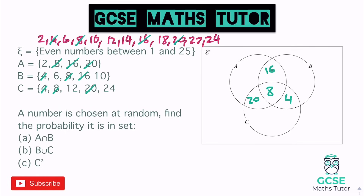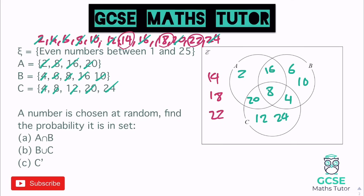Now the numbers only in A: 2. Only in B: 6 and 10. Only in C: 12 and 24. Cross all of those off. The remaining numbers — 14, 18, and 22 — go around the outside. That completes the three-circle Venn diagram.